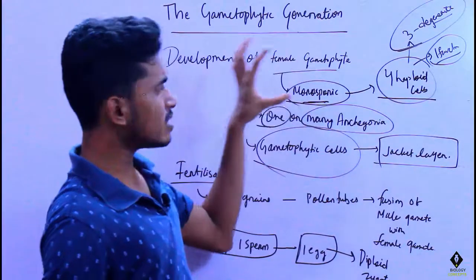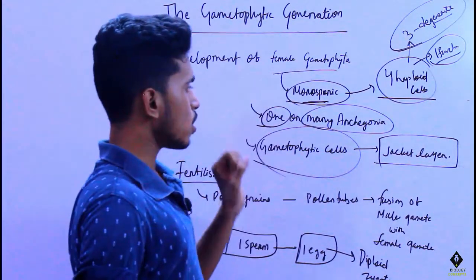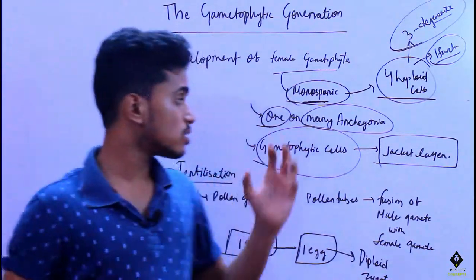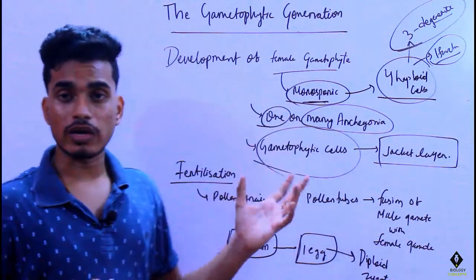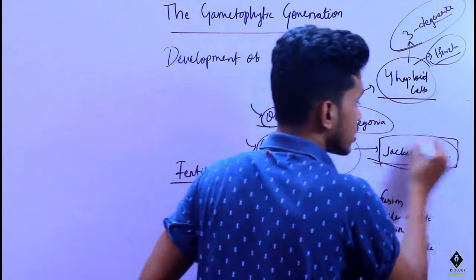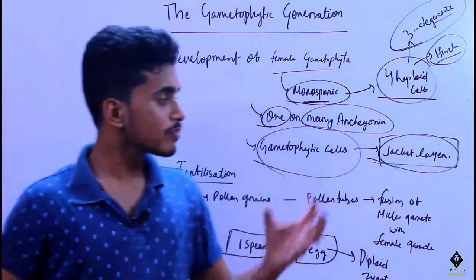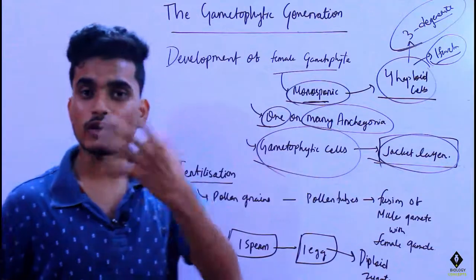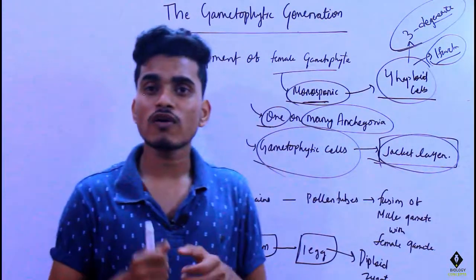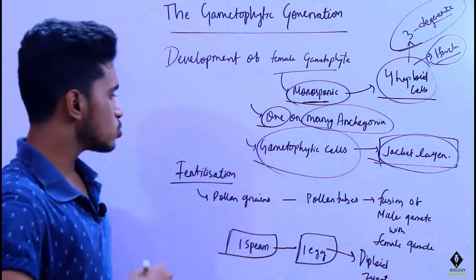In a female gametophyte you can find one or many archegonia. The gametophyte cells which surround the archegonia act as a jacket layer. The function of the jacket layer is to provide nutrition as well as some protection to the archegonia.